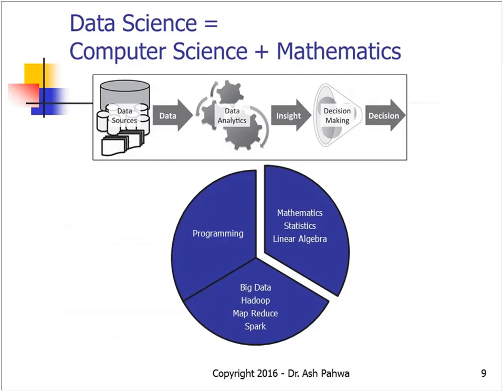Data science is a combination of three things: programming, which comes from computer science; big data, which involves tools like Hadoop or Spark; and mathematics. If you have a degree in computer science, they usually only cover programming and big data — mathematics is something that is missing. When you combine programming, mathematics, and big data, the whole thing becomes data science. In data science, we have a source of data, we build models from it, and from there we can predict what's going to happen by computing the probabilities of certain events.